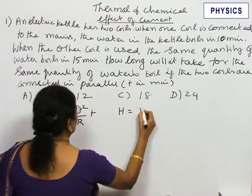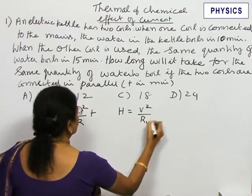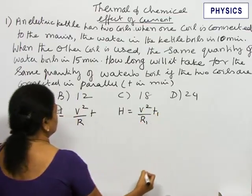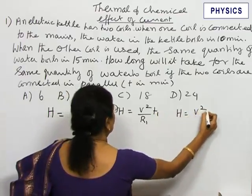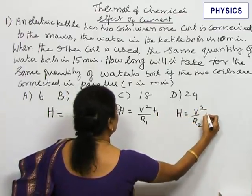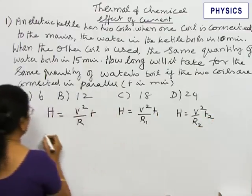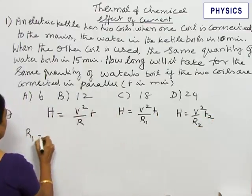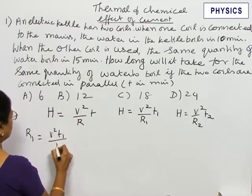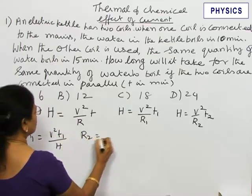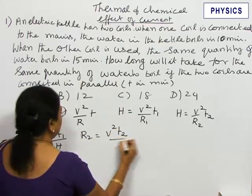First case, when we are using the first coil, its resistance is R1 and the time taken is T1. Second case, when we are using the next coil, it becomes V squared by R2T2. From this, we can find R1 and R2. So R1 is V squared T1 by H. R2 is V squared T2 by H.